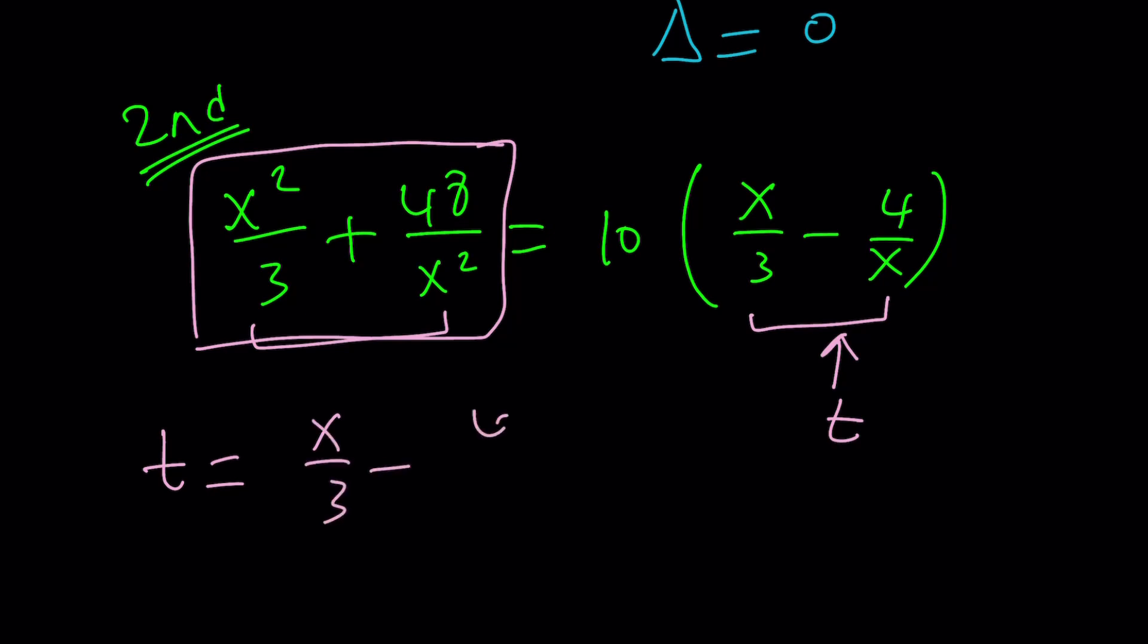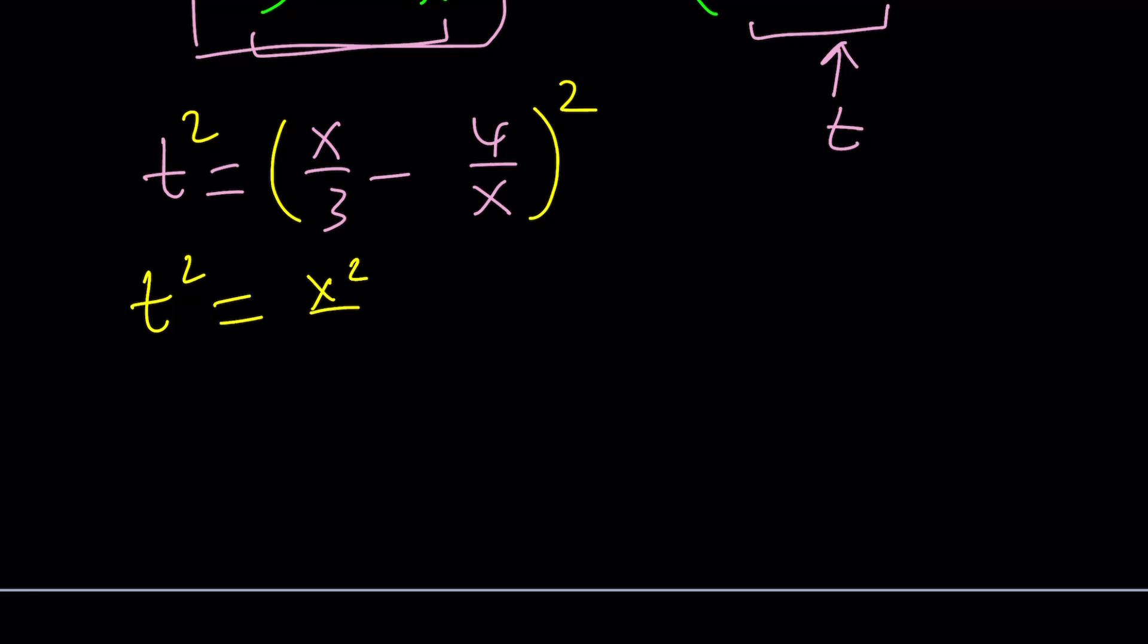It's kind of like trial and error sometimes. x squared over 9, that's the first term, and then 16 over x squared, I usually do the squares first, minus 2ab, is going to give me 2 times x over 3, times 4 over x.